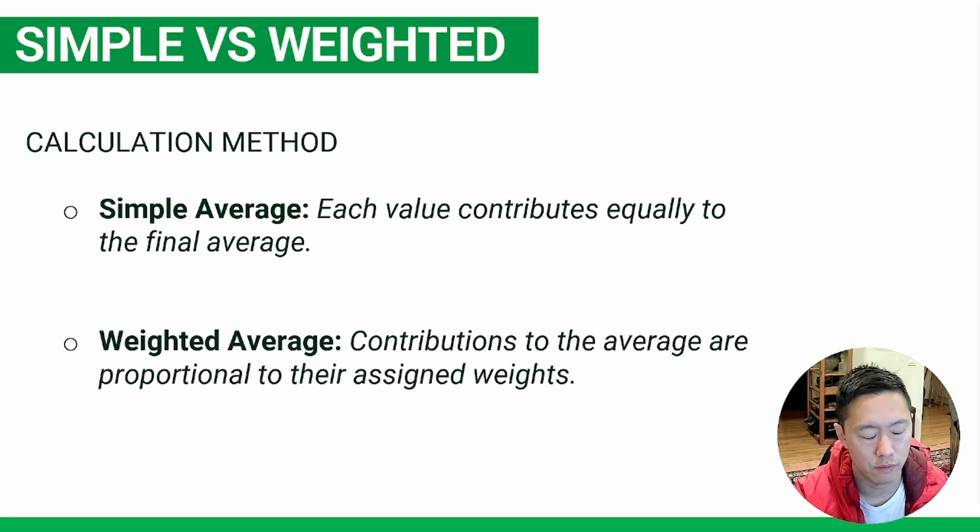Simply put, simple average just divides everything evenly by the total items, whereas weighted average considers whether any item is worth more than the other.